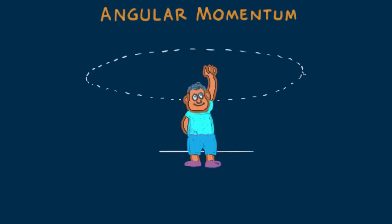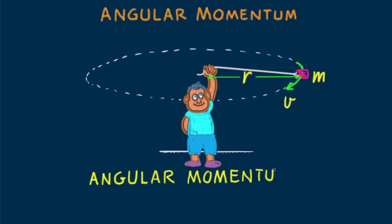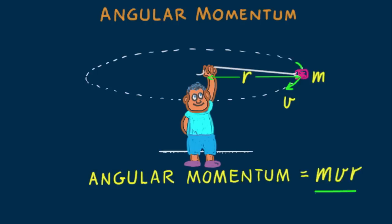We see Phil Fizziker whirling a tin can in an overhead circle. The can has momentum — its mass multiplied by its speed. The can also has angular momentum. In the simplest sense, we define angular momentum as the linear momentum multiplied by a radial distance. That's angular momentum equals the product of mass times speed times radial distance. Multiplying the mass of the can by its speed and by its radial distance — its distance to the center of its circular path — gives the can's angular momentum.